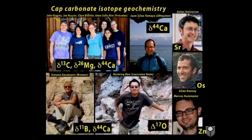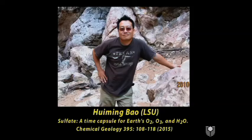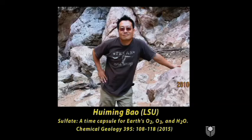Let me talk about the triple oxygen isotope work of Huiming Bao, at Louisiana State University. He did his PhD at Princeton with Paul Koch and Dan Schrag, then a postdoc at Scripps with Mark Thiemens, who discovered that mass-independent fractionations occur with some chemical reactions. Mark Thiemens showed that chemical reactions in the stratosphere catalyzed by photolysis actually drive strong mass-independent fractionations — that is, fractionations that deviate from mass dependence. There are three isotopes of oxygen: O-16, O-17, and O-18. With mass-independent fractionations, you have either an excess or a deficiency of O-17 relative to mass-dependent fractionations, called cap-delta-O17.